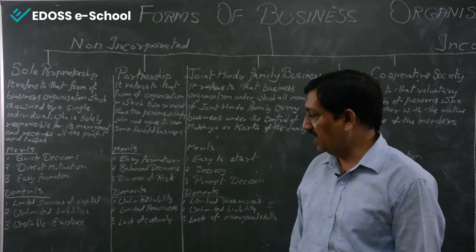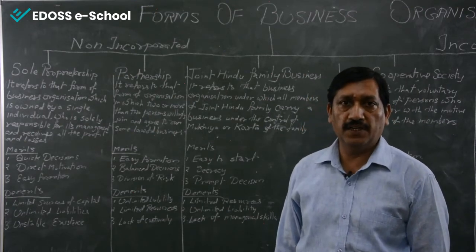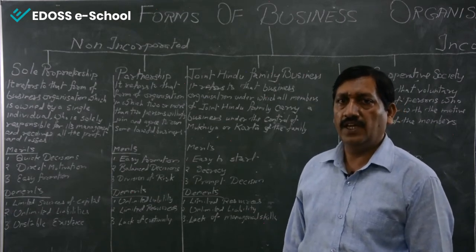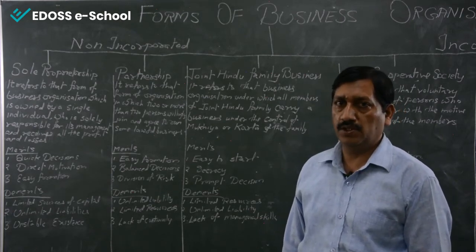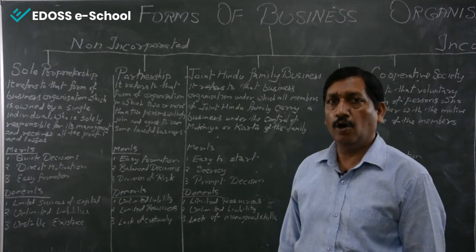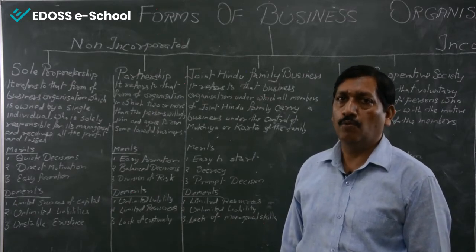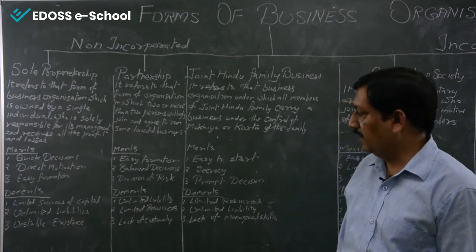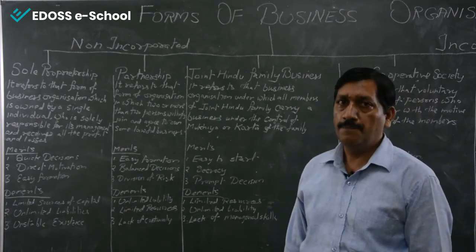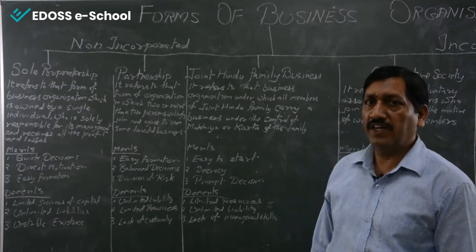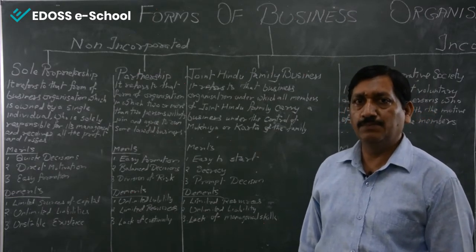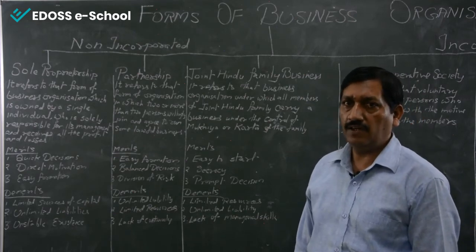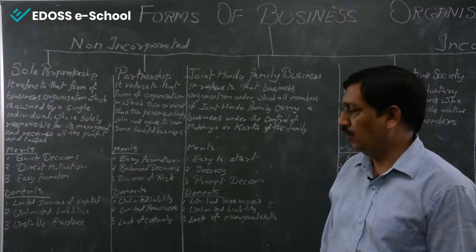Demerits of partnership: Unlimited liability — if partners are not able to repay the loan taken from the bank, their personal property can also be used, and it is not necessary that all members' property will be used — one person's property can be used for another's debt. Limited resources — whatever capital they invest must be arranged by themselves; for a loan they need assets as security.